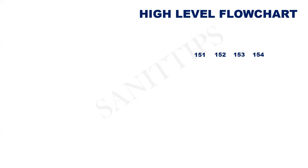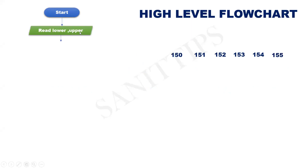Let us see the high level flowchart first. We do not know what is the lower range and the upper range, so first we need to read the lower and upper range. Assume that we want to find the palindrome numbers between 150 and 155. So 150 is the lower range and 155 is the upper range. First, we need to check whether 150 is palindrome or not. So 150 is in the variable lower — is lower palindrome?